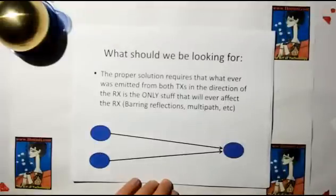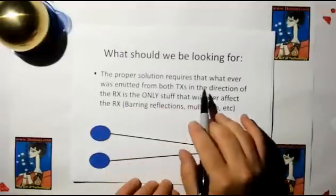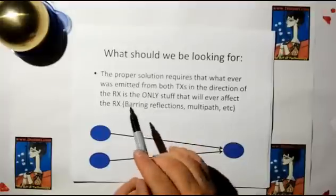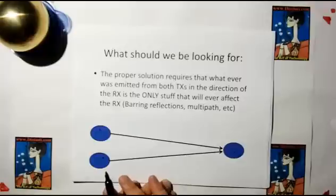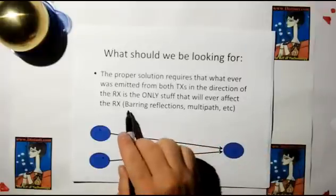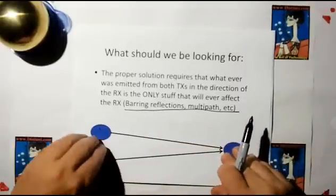So what should we be looking for? The proper solution requires that whatever was emitted from both transmitters in the direction of the receiver is the only stuff that will ever affect the receiver, barring reflections and multipath.